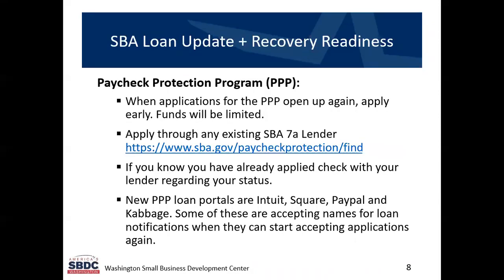The other program we're going to talk about is the Paycheck Protection Program, or PPP. Applications for the PPP are going to open up again as soon as these funds are finalized, and the funds are going to be limited and will probably go fairly quickly. The first allocation for the PPP was about $348 billion and that went in just a few weeks. This new allocation has been proposed at about $310 billion, so it will likely go rapidly as well — be ready to apply. These applications are made through 7A lenders, SBA-approved lenders.